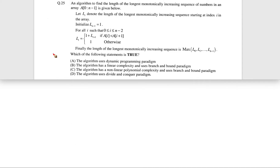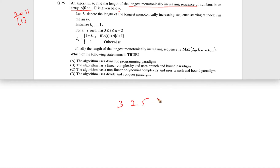This question came in GATE 2011 for one mark. The question is: an algorithm to find the length of the longest monotonically increasing sequence of numbers in an array A from 0 to n minus 1 is given below. A sequence of numbers is given — something like 3, 2, 5, 6, 9, 3, 4 — and we have to find the longest monotonically increasing sequence. They have given the method and are asking about the paradigm of the algorithm.